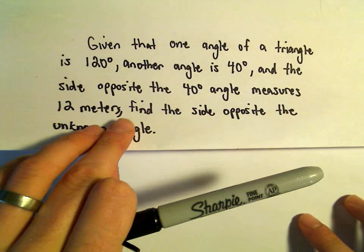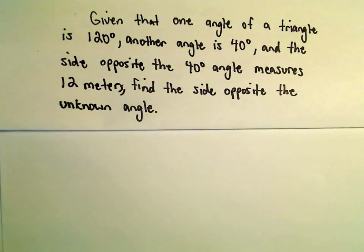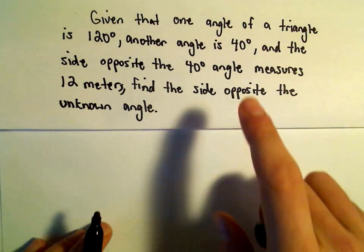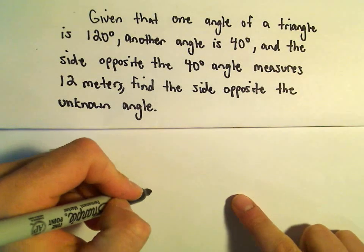Let's do an example. Suppose we're given that one angle of a triangle is 120 degrees and another angle is 40 degrees. We know the side opposite the 40 degree angle measures 12 meters. We want to find the side opposite the unknown angle.